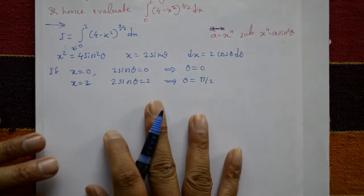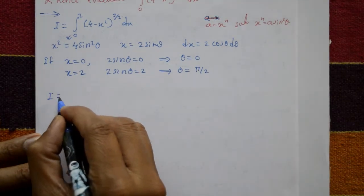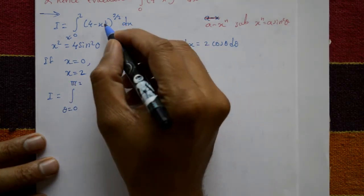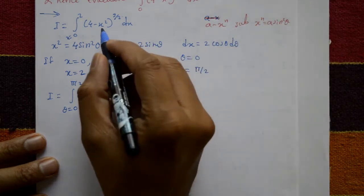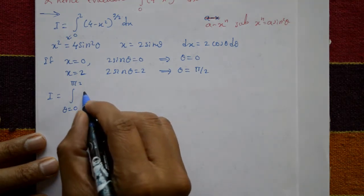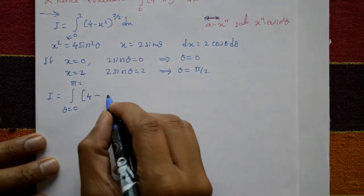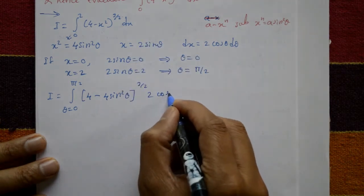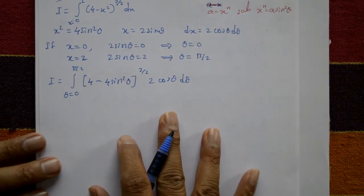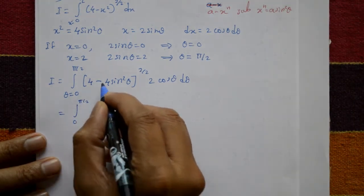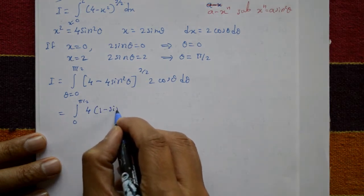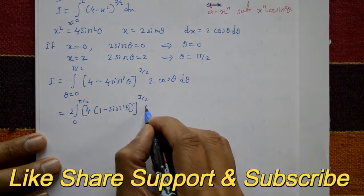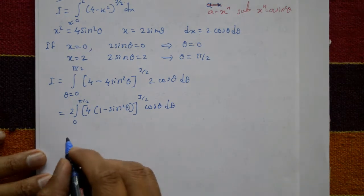Therefore I equals the integration from 0 to pi by 2. The term (4 minus x squared) becomes 4(1 minus sine squared theta) to the power 3 by 2, and dx becomes 2 cos theta d theta.